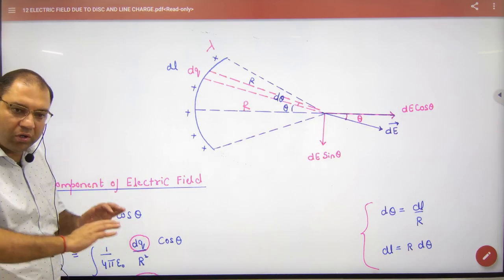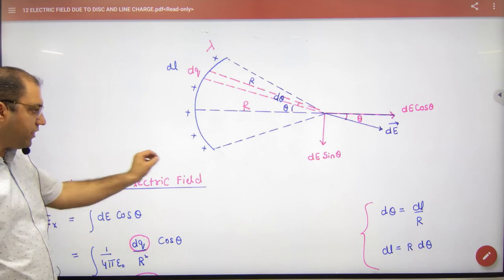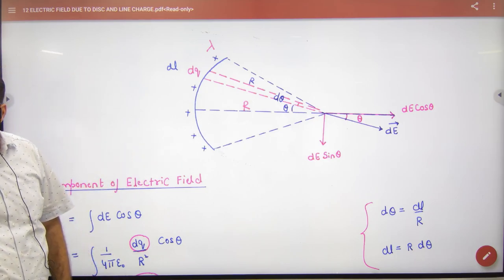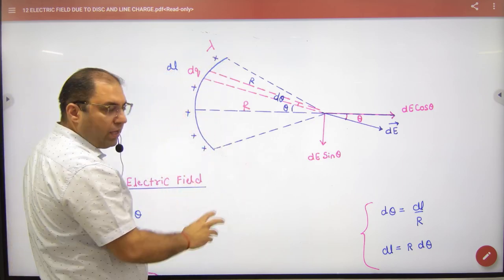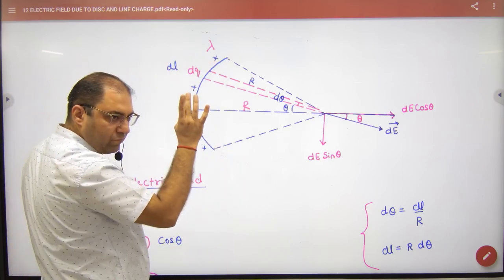This proof is not in NCERT, so write not for NCERT proof. In the formula register there will be entry. You have to take an arc and take a small element of this arc, like we used to take in the ring.